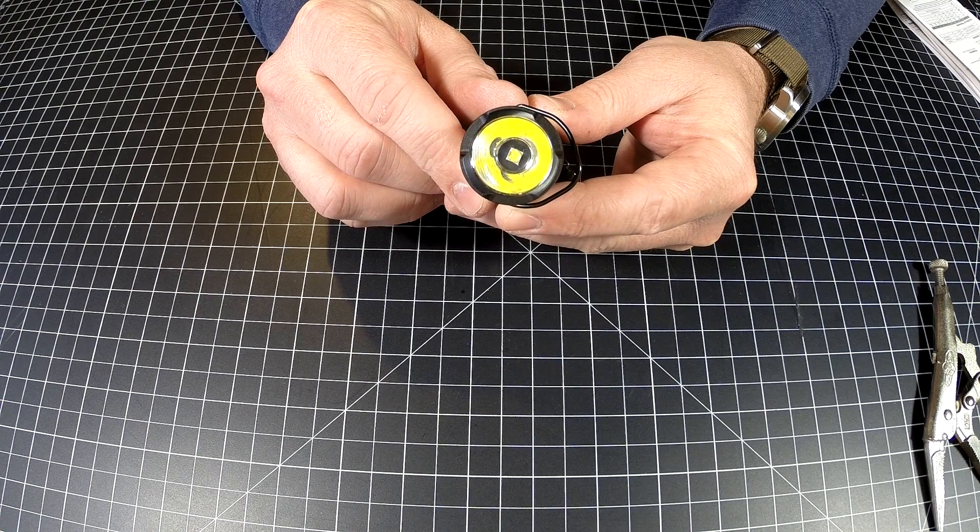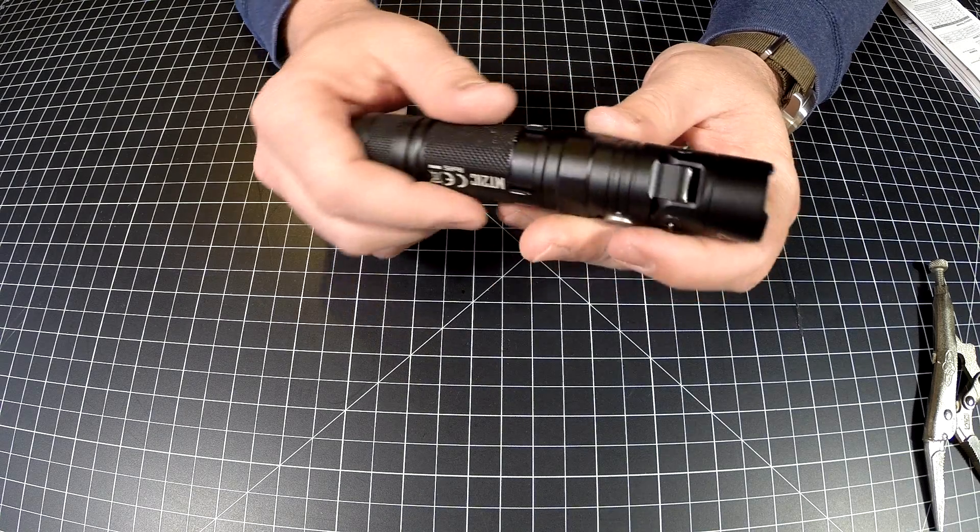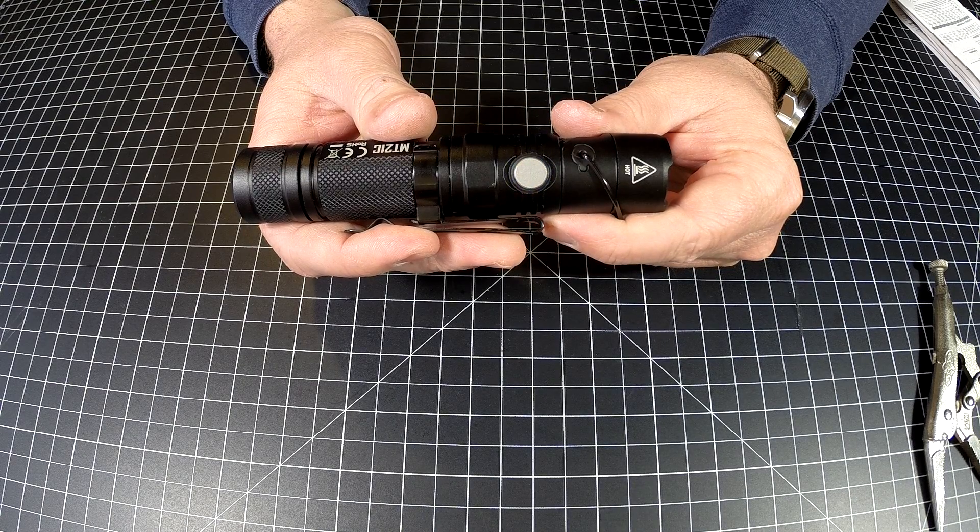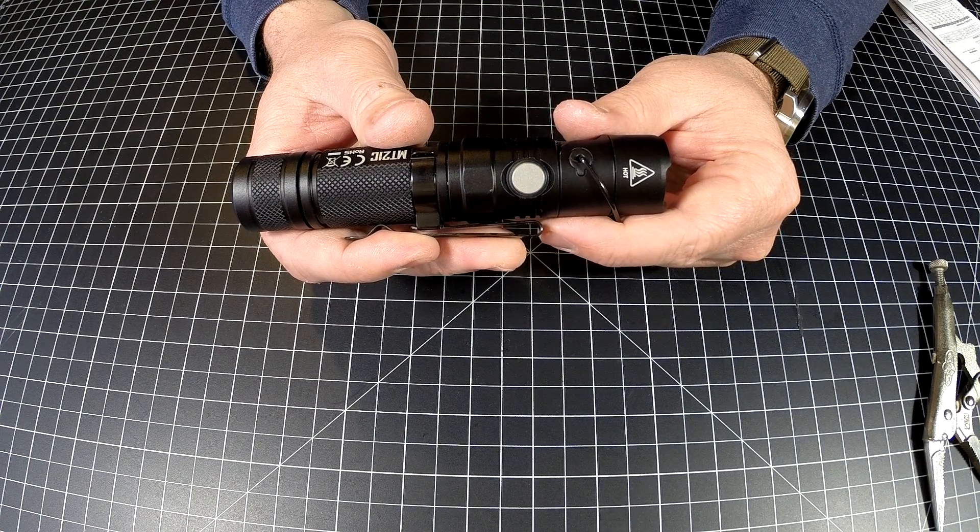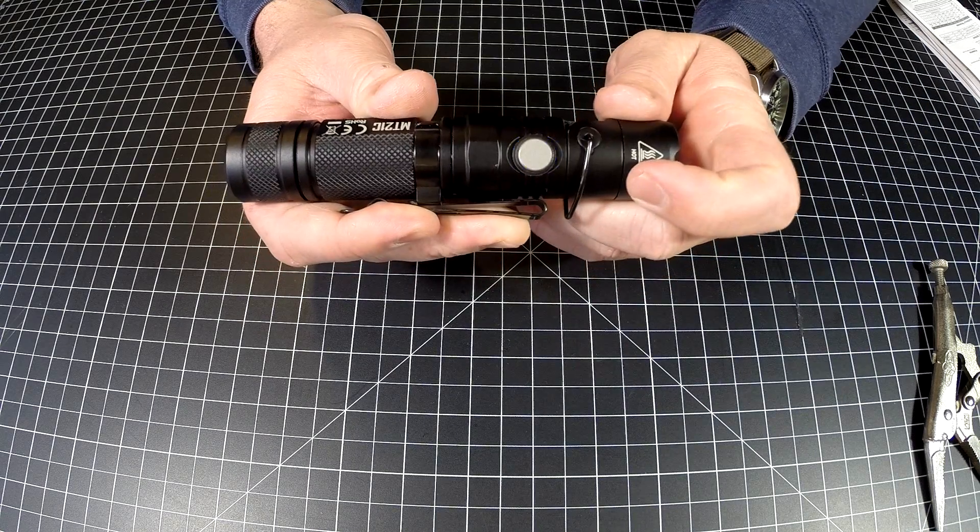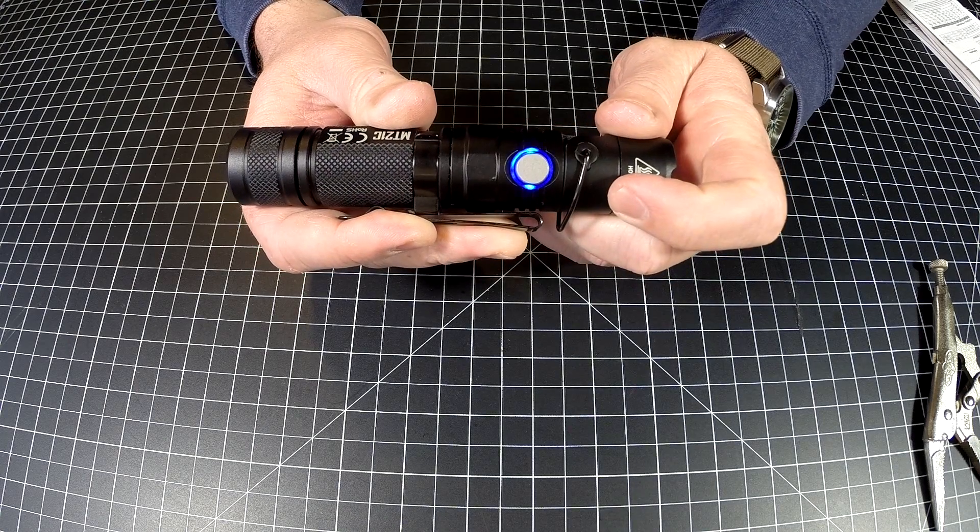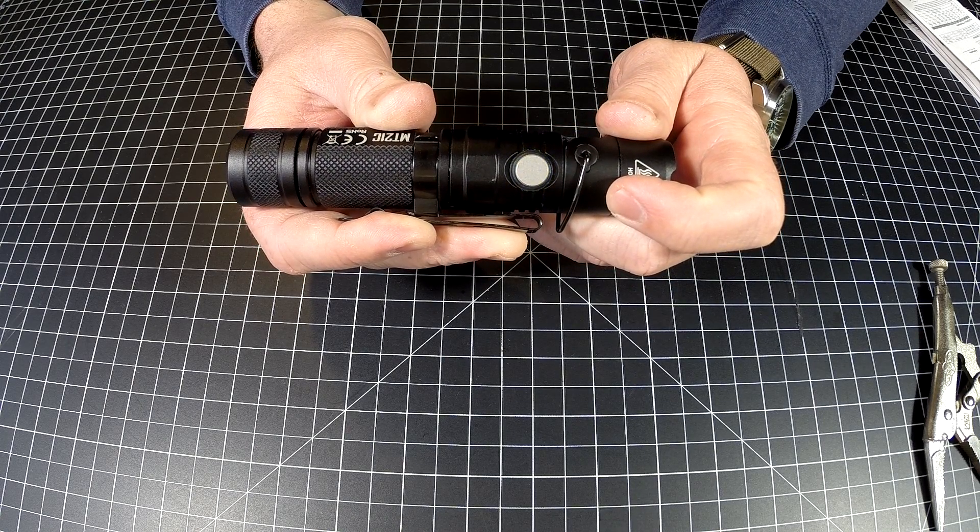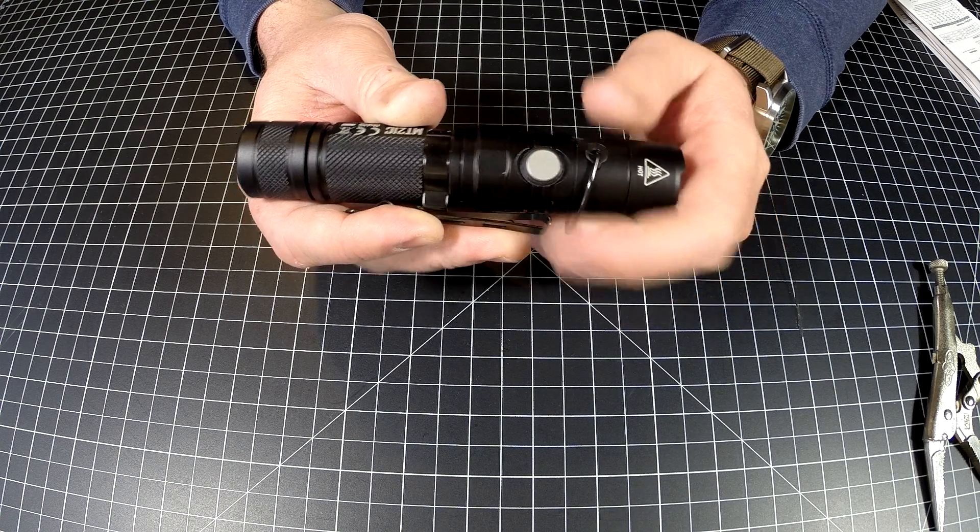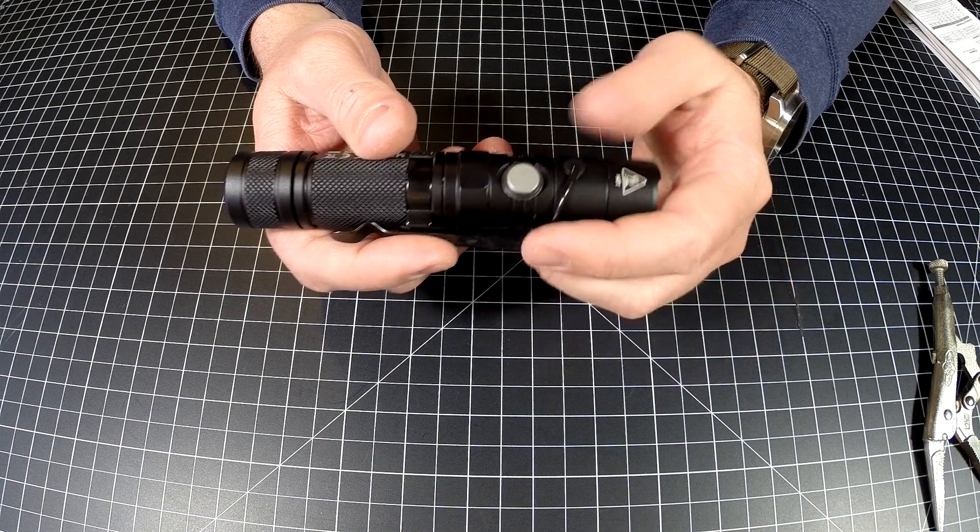The LED is a Cree XP-L HD V6. The battery meter is one of the brightest and most accurate I've seen. It reads in tenths of a volt. Click it once and it shows four blinks, pause, one blink - that's 4.1 volts. It's pretty accurate. If the battery gets really low, this will just flash.